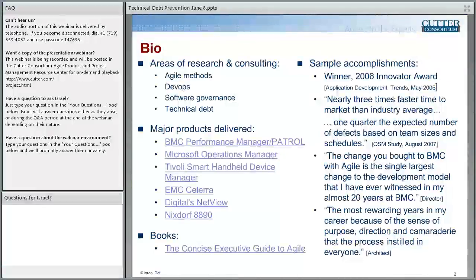Dr. Israel Gadd is Director of Cutter Consortium's Agile Product and Project Management Practice. He is recognized as the architect of the Agile Transformation at BMC Software, where under his leadership Scrum users increased from 0 to 1,000, resulting in nearly three times faster time to market than industry average and 20 to 50 percent improvement in team productivity. Dr. Gadd's executive career spans top technology companies including IBM, Microsoft, Digital, and EMC. He has led the development of products such as BMC Performance Manager and Microsoft Operations Manager. He posts frequently at the Agile executive and tweets as Agile underscore exec. Welcome, Israel.